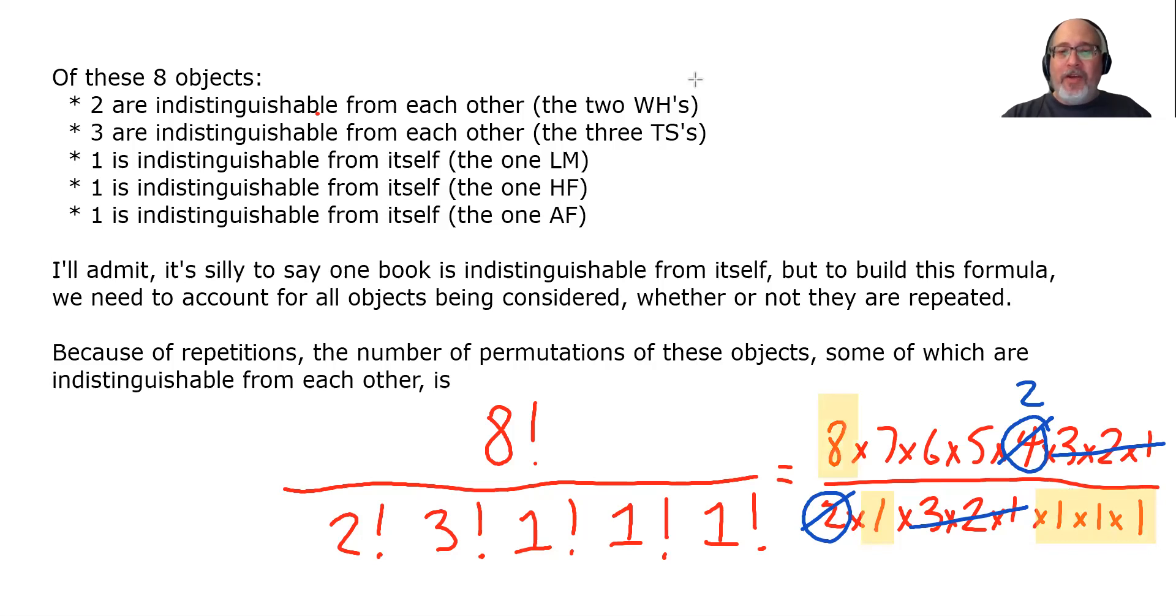And in the numerator, we're left with 8 times 7 times 6 times 5 times 2. I'm not going to waste your time trying to do that in my head, although I know I could. 3,360. And so there are 3,360 ways to arrange these 8 books if two of them match the Wuthering Heights, three of them match the Tom Sawyers, and the others are all different.